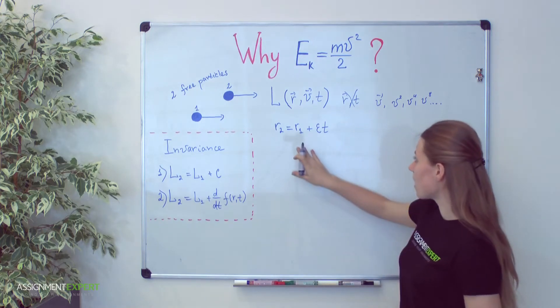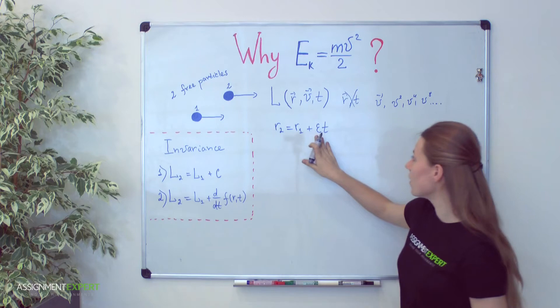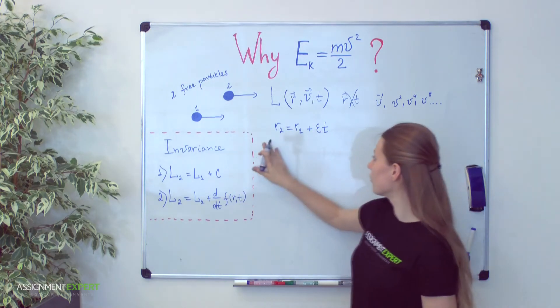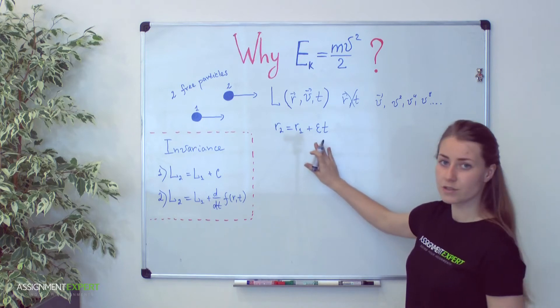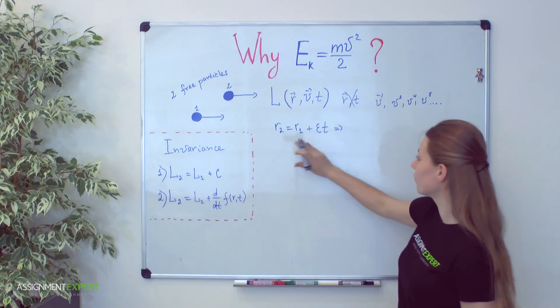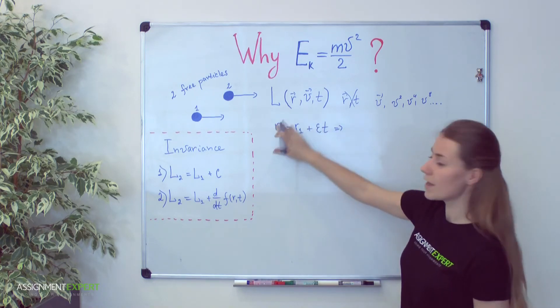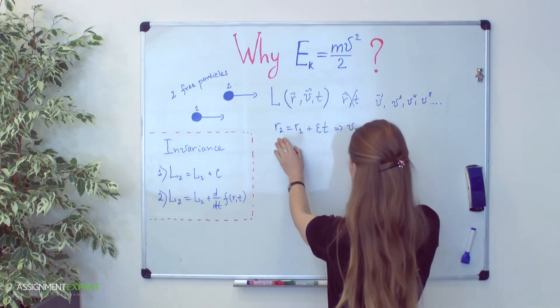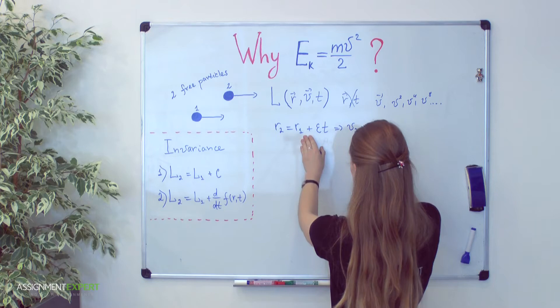Now let's say that our second particle moves with very small coefficient velocity epsilon with regard to the first. From this formula we can easily derive the transformation for velocity. We can differentiate this first formula. You see that it will be velocity 2 equals velocity 1 plus epsilon.